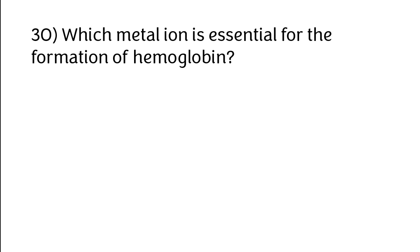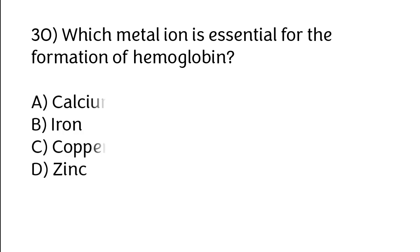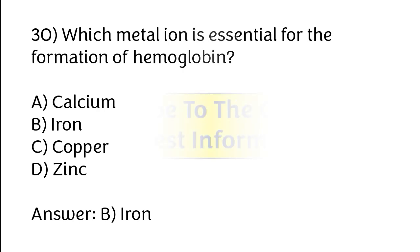Which metal ion is essential for the formation of hemoglobin? Options: Calcium, iron, copper, zinc. The correct answer is Option B: Iron.